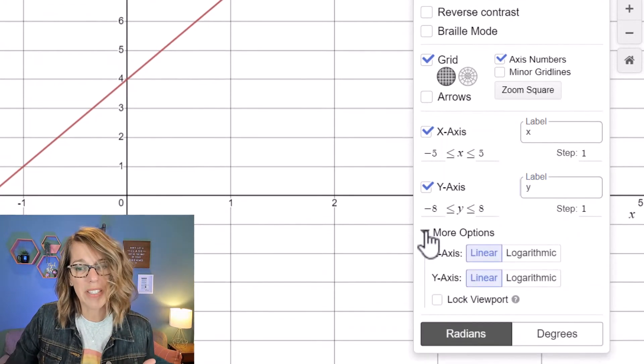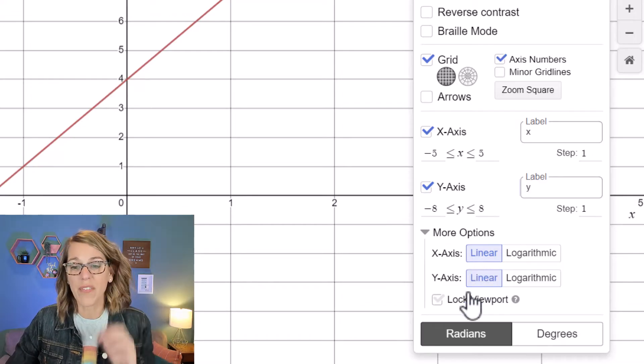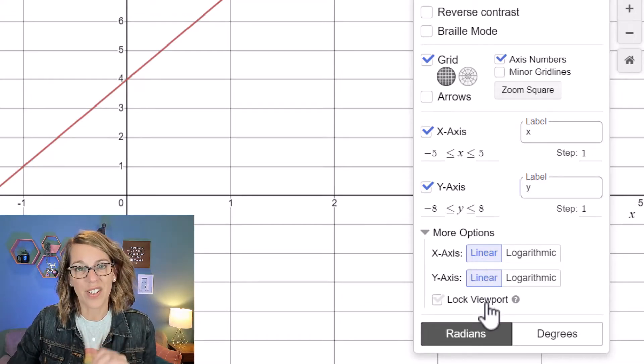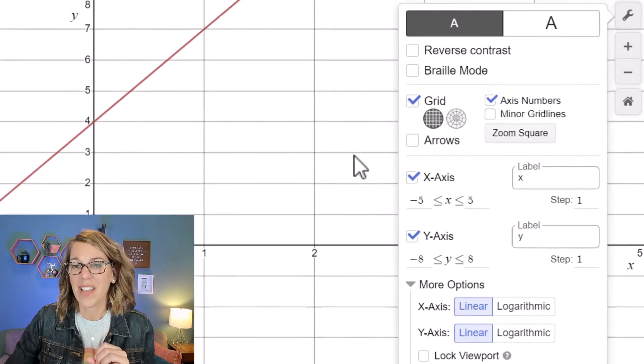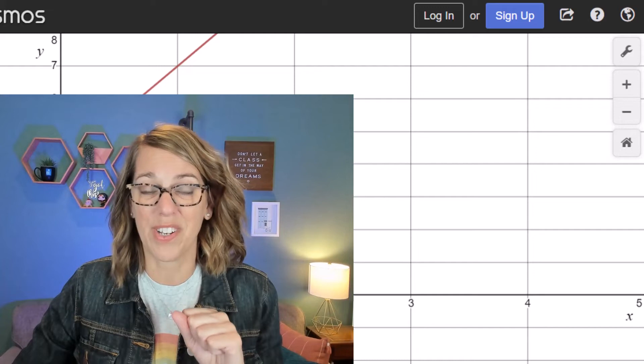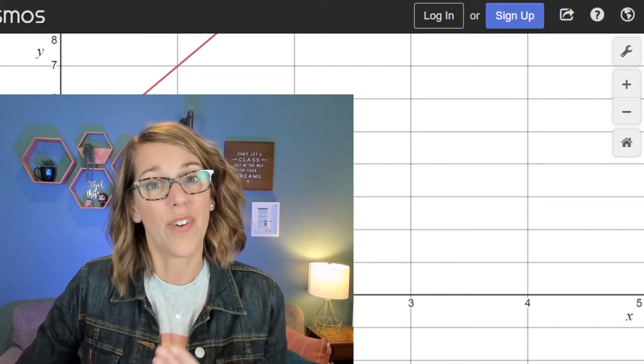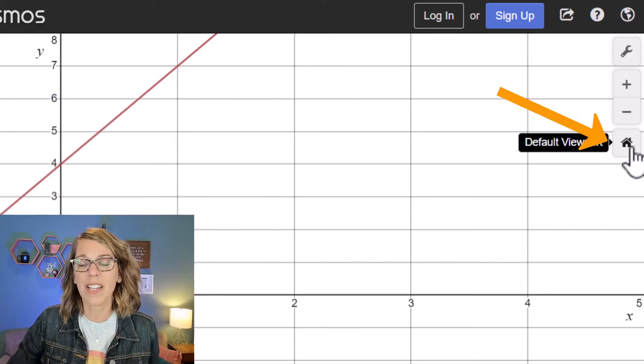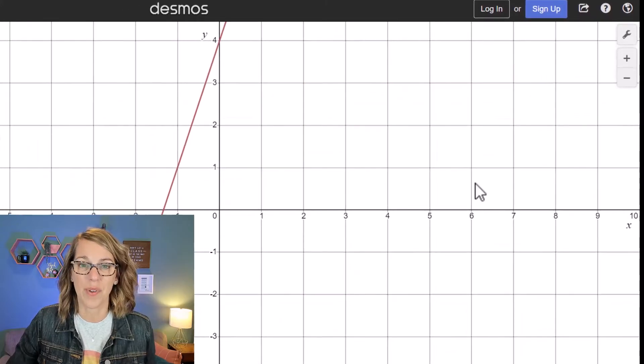Now under more options there's not a lot of things that are useful here depending on what you're graphing, but you can lock your viewpoint if you want. I am going to uncheck this and I want to show you a few more things. First of all, I want to show you how to get back to the default viewing screen, and that's just by clicking on this home button here.